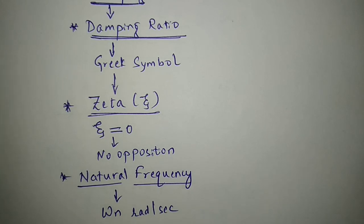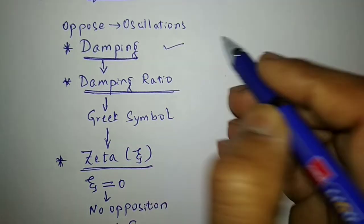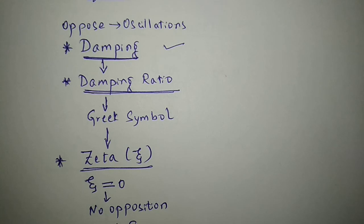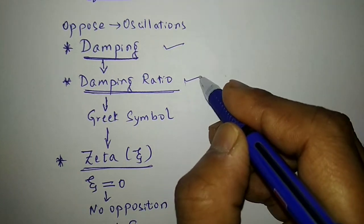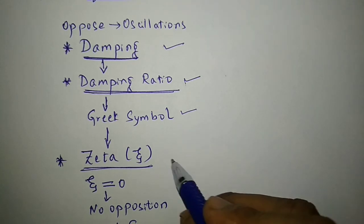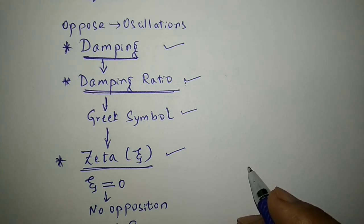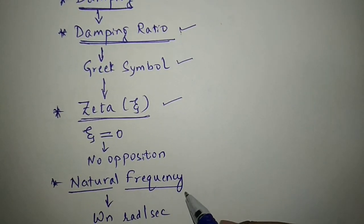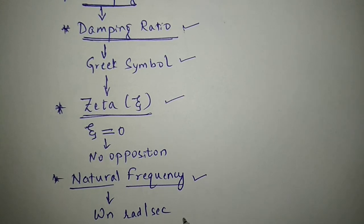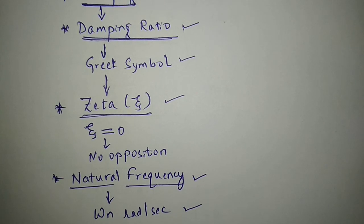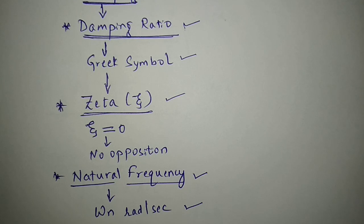To summarize: every practical system takes some finite time to reach its steady state. During this period the system oscillates, and every system has a tendency to oppose this oscillation, which is called damping. Damping is measured by the damping ratio, denoted by Zeta. If Zeta is 0, there is no opposition, the system oscillates freely — this is natural oscillation, and its frequency is called natural frequency, denoted by Omega n in radians per second. With these terminologies understood, we are ready to study the unit step response of a second order system in the next video.